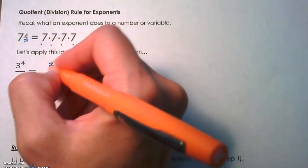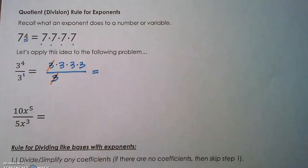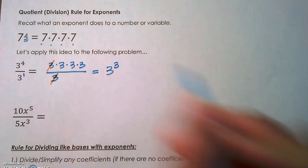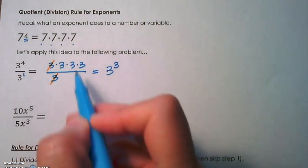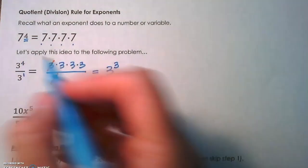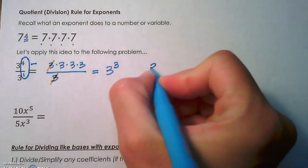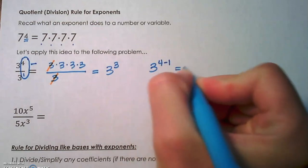So I can cancel out a 3 in the numerator and a 3 in the denominator. We're left with 3 to the third power. Again, we could bypass all of this expanded form if we just use the quotient rule, which says to subtract the exponents. So 3 to the 4 minus 1 would be 3 to the third.